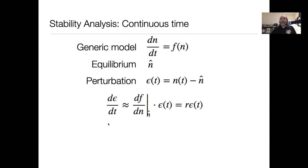As before, we're going to approximate this using a derivative. The change in epsilon with t — d(epsilon)/dt — if we take the derivative, we're taking the derivative of this function with respect to t, remembering that the equilibrium doesn't change. So we want to know the slope df/dn times the perturbation, and this little r is directly analogous to the lambda in the previous discrete time version.